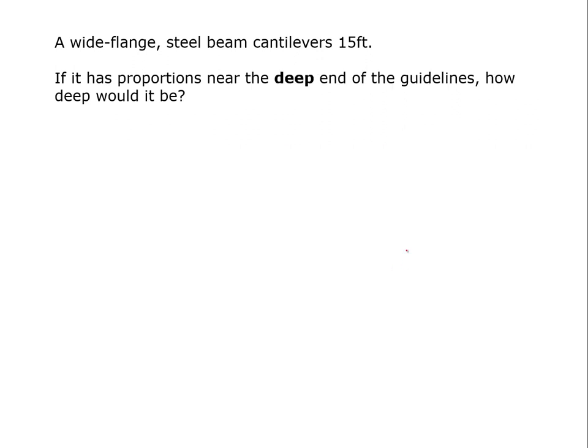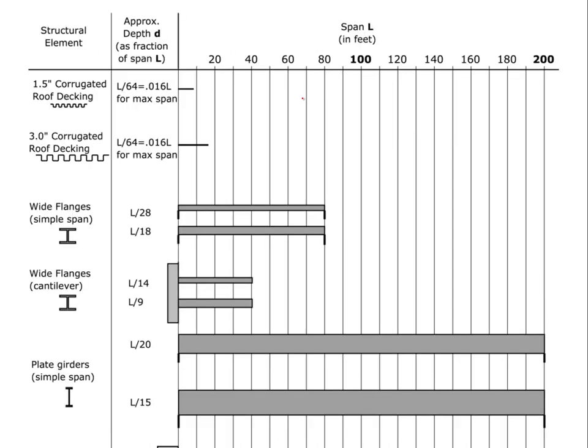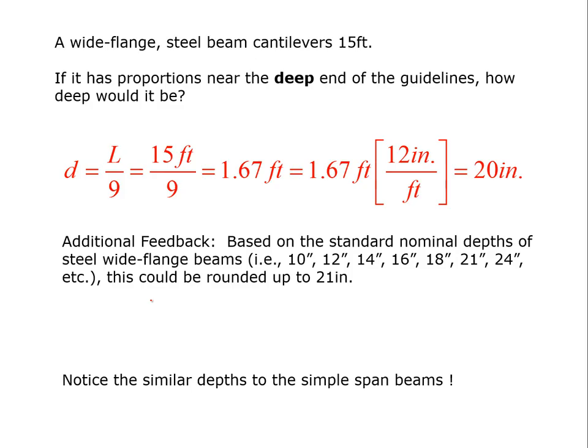Now I ask the question, what if the same 15-foot cantilever is near the deep end of the proportions? So we go to look and we see the deep end of the cantilever wide flange is L over 9. And when we run that number, we get d is equal to L over 9, which is 15 feet over 9, which is 1.67 feet. And when we convert that, we get 20 inches. And again, 20 inches is not a nominal dimension.